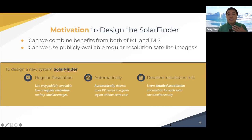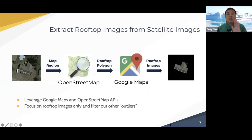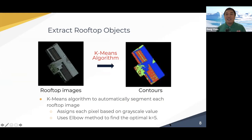In addition, we can report the detailed installation information for identifying the solar site simultaneously. This shows the pipeline of our Solar Finder system. First, we want to extract rooftop images from the satellite images. We leverage OpenStreetMap and Google Maps API to extract rooftop-only satellite images.